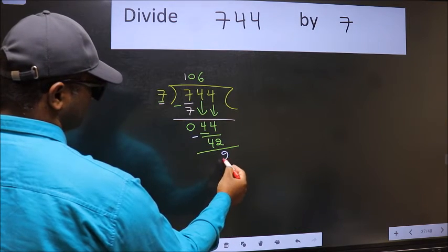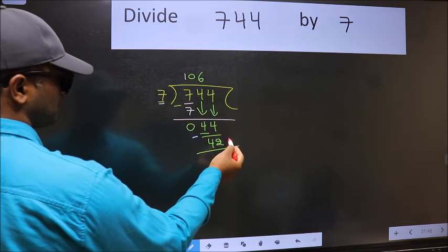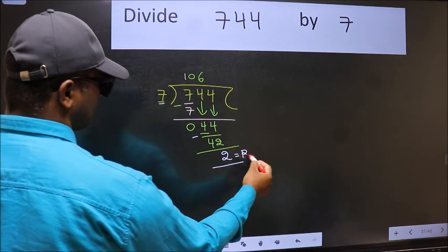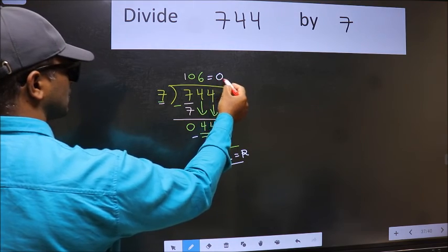We get 2. No more numbers to bring down, so we stop here. This is our remainder and this is our quotient.